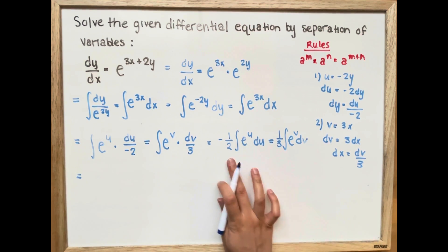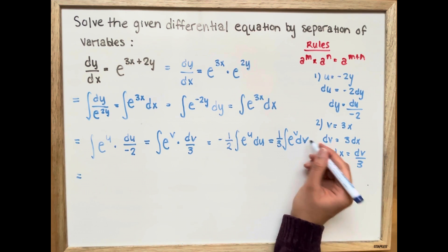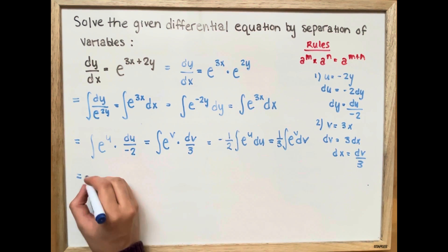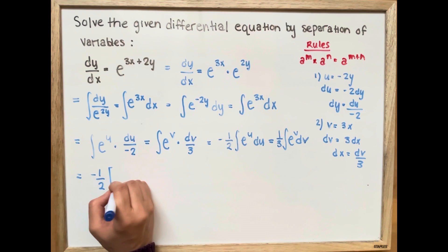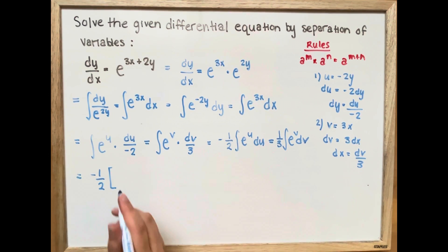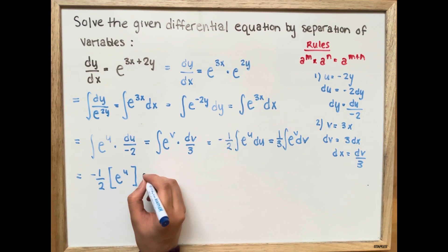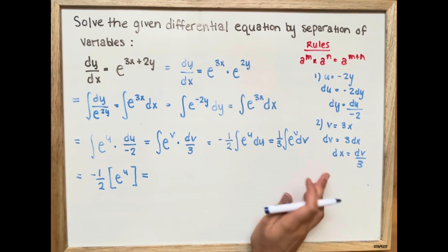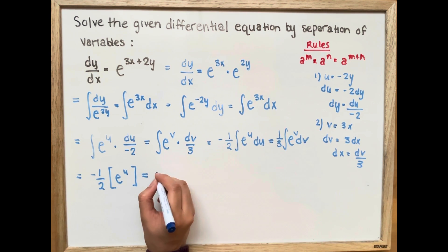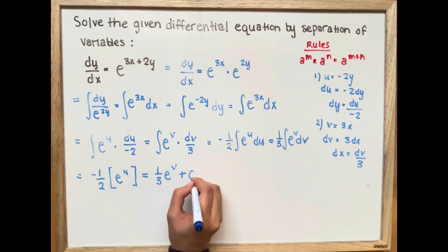Now we're left with a simple integral on both sides. The integral of e to the u is just e to the u, and the integral of e to the v is just e to the v. We're going to add plus c.